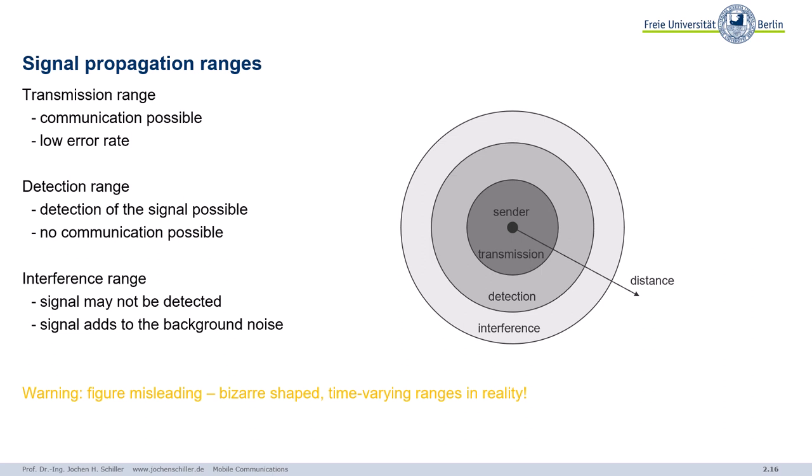Now we know the basics about signals. We know a bit about antennas. Now we let the signals fly into space. What happens? Well, the closer you are to a sender, the better the signal quality is. The signal is stronger. That's quite obvious. The farther away you are, the weaker the signal is.